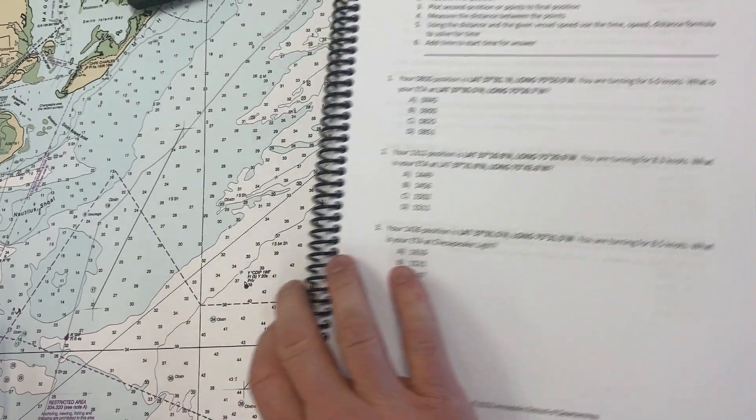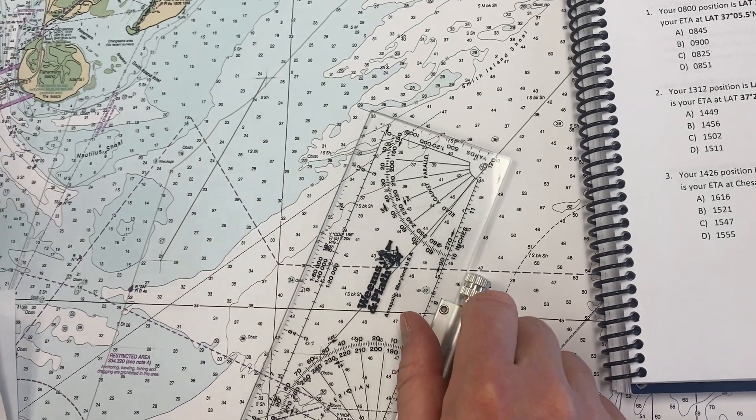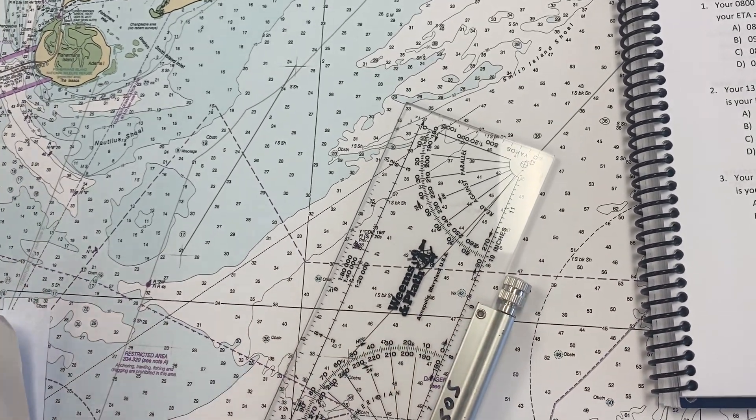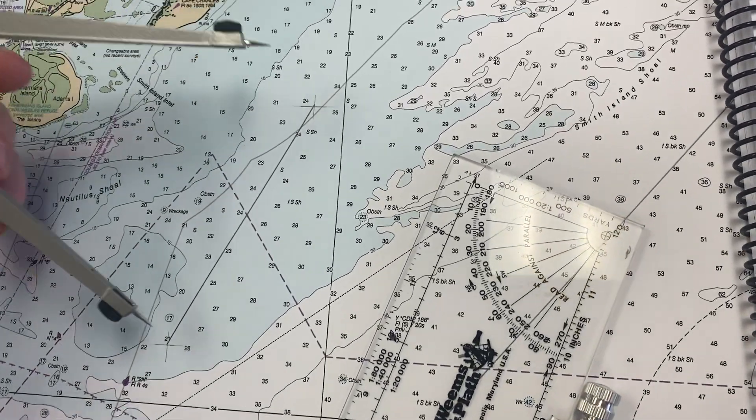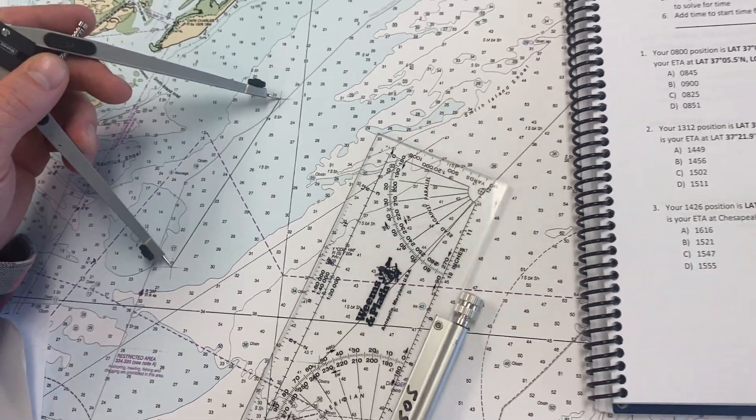Now, I've gone and done like I always do and connected the two points with a line. I need to know the distance between these two points. In this case, they're close enough together, I can just put the two points right between them.